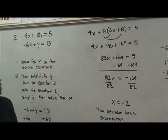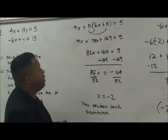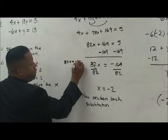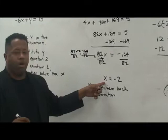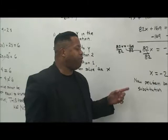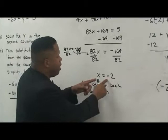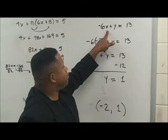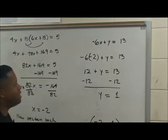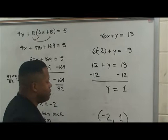We subtract 169 from both sides, giving us 82x equals negative 164. Then we divide both sides by 82, and x is equal to negative 2. Now we perform back substitution — we take x equals negative 2 and plug it back into the second equation since it's more simplistic. Negative 6 times negative 2 plus y equals 13, and solving for y gives us y equals 1. So x equals negative 2 and y equals 1.